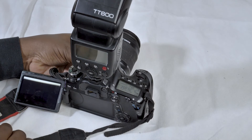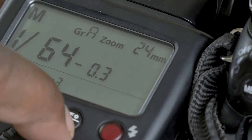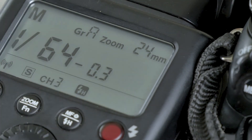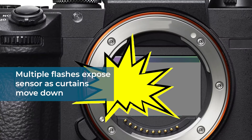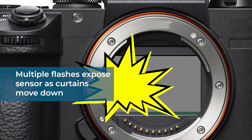To achieve high speed sync, you need a high speed sync capable speedlight, like this Godox TT600. When you put your flash in high speed sync mode, instead of it going off just once when you take the picture, it gives off bursts of light at microsecond intervals as the shutter opens and closes.